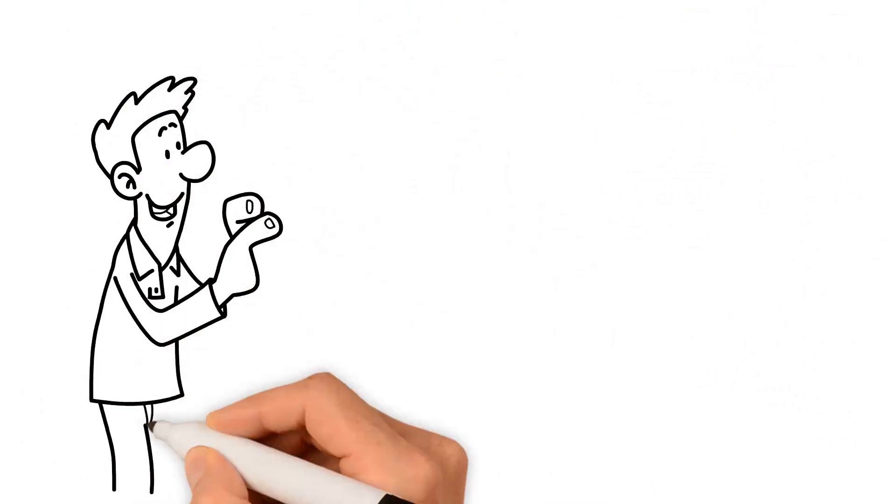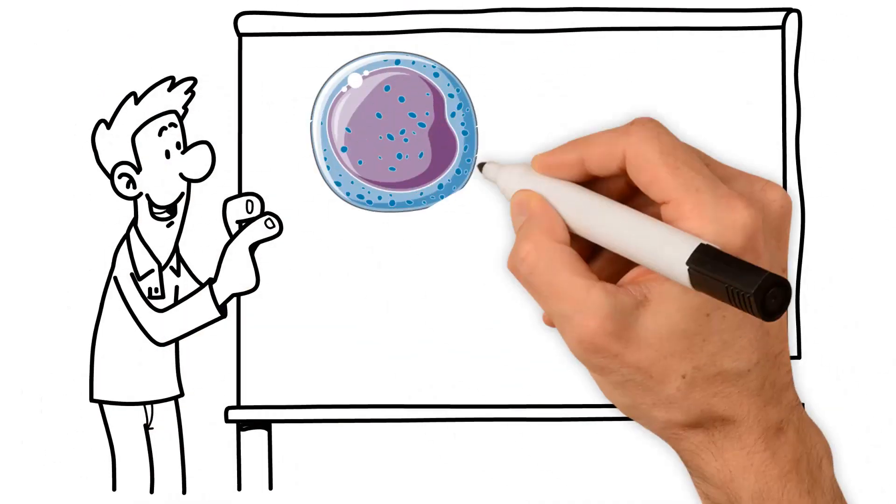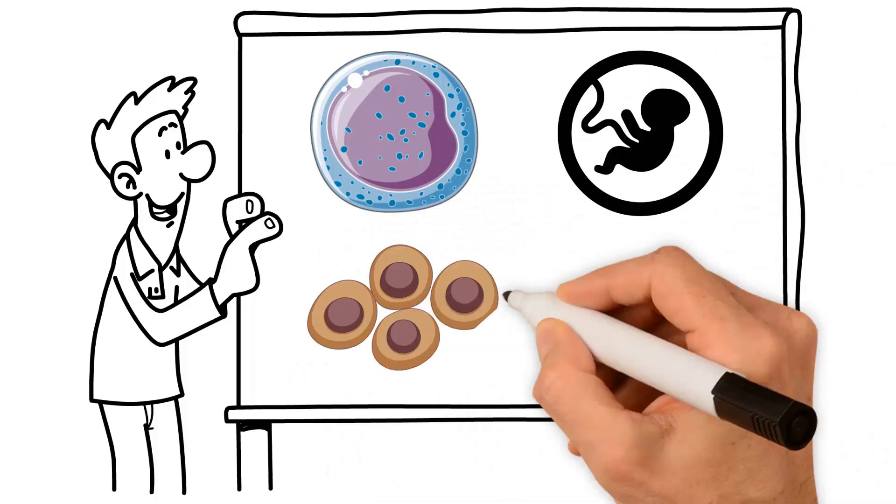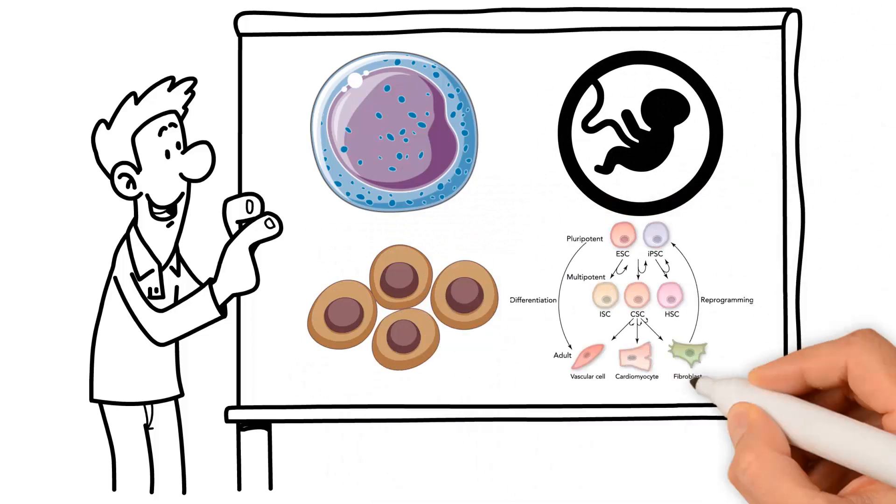There are four types of stem cells that we'll elucidate: embryonic, fetal, adult, and induced pluripotent, also known as IPS.